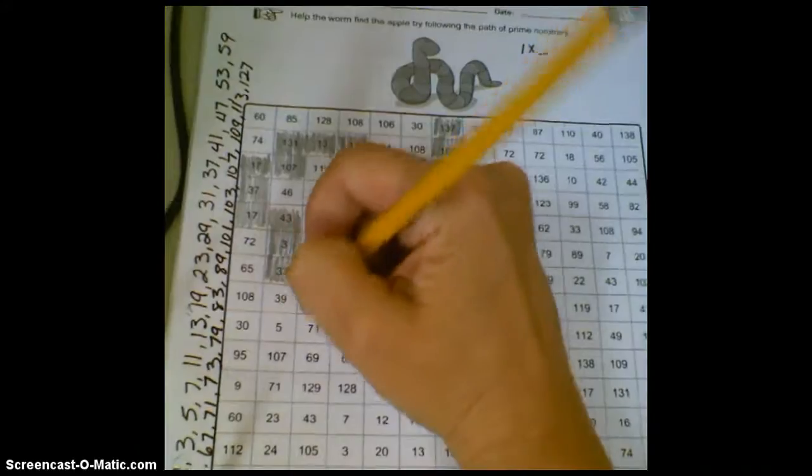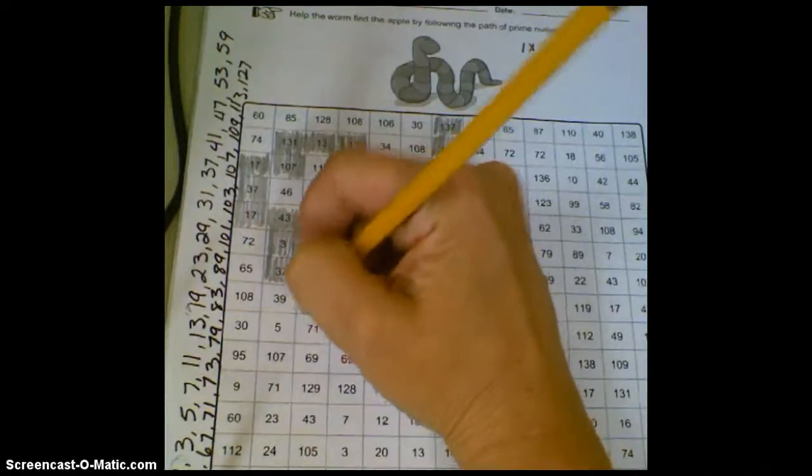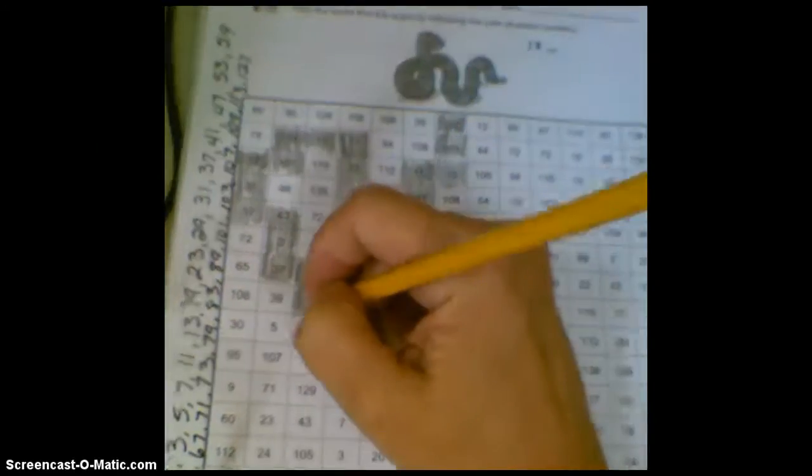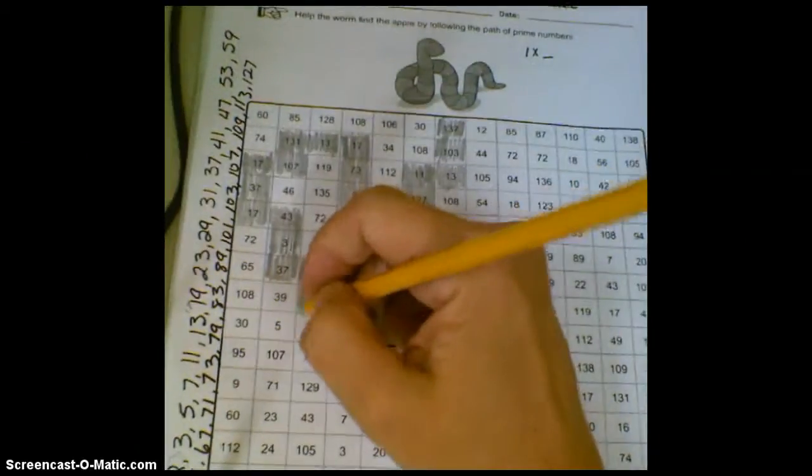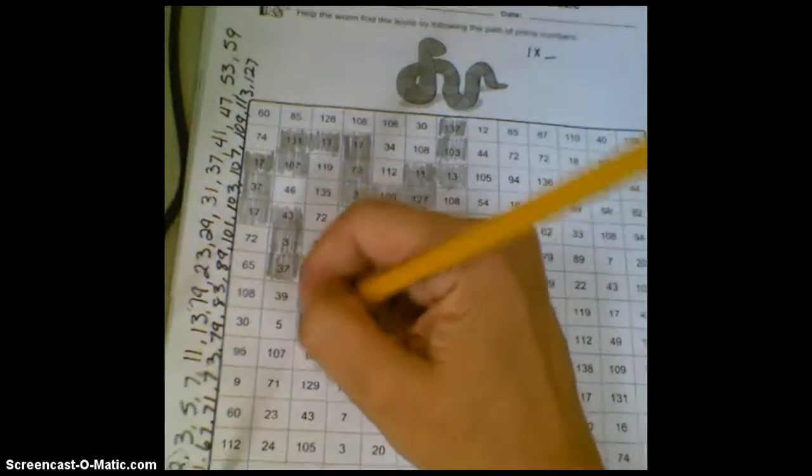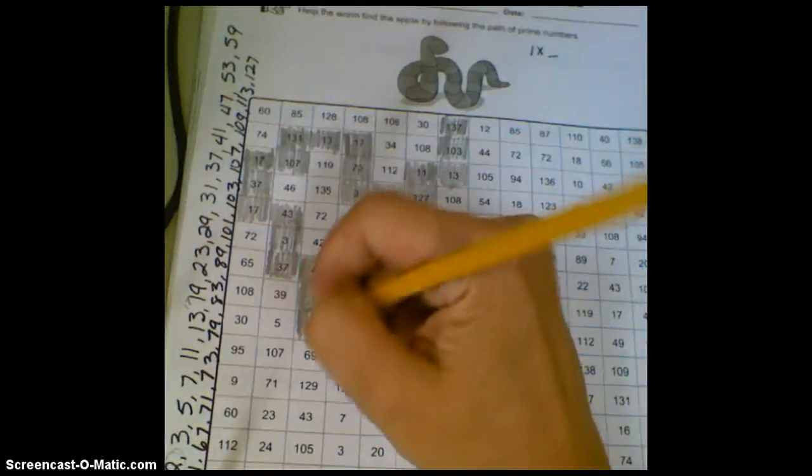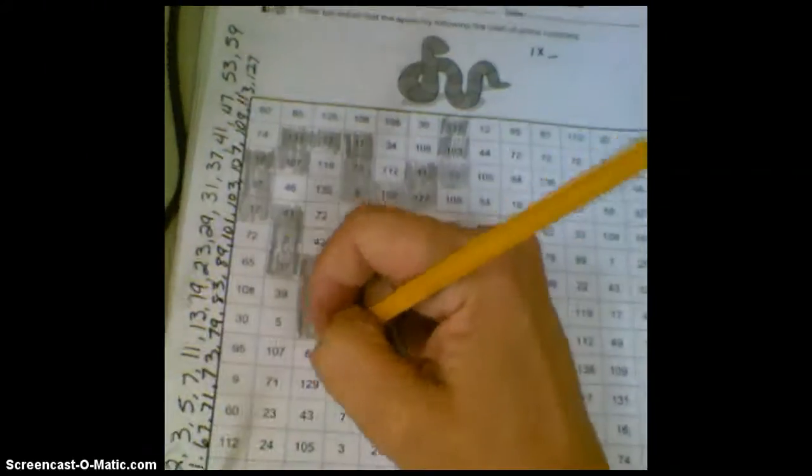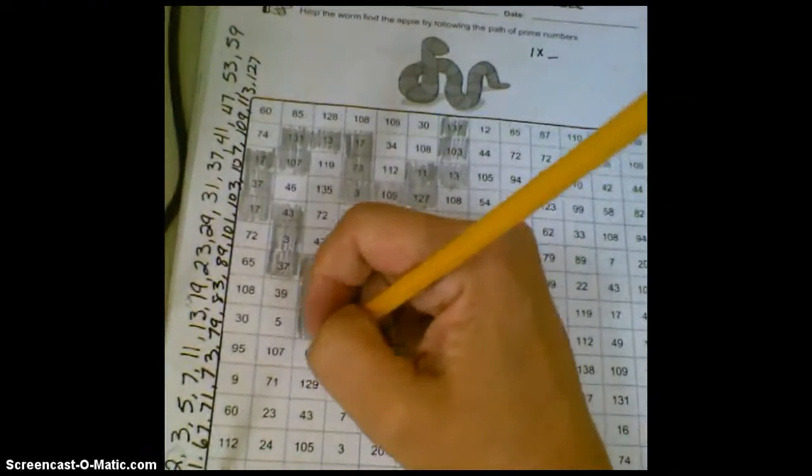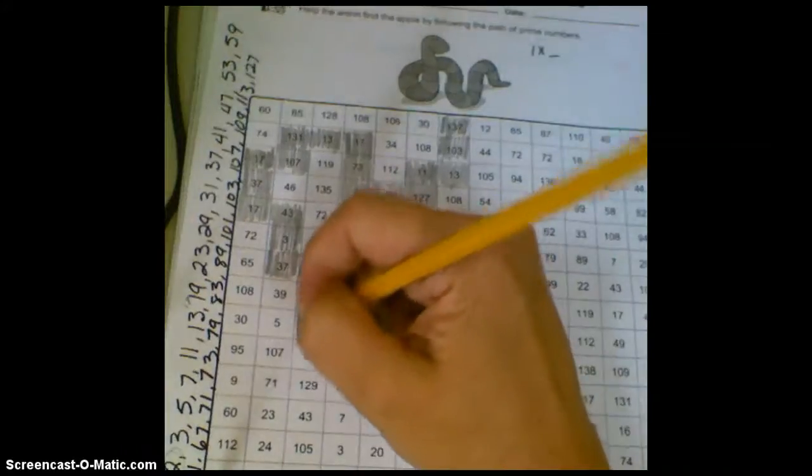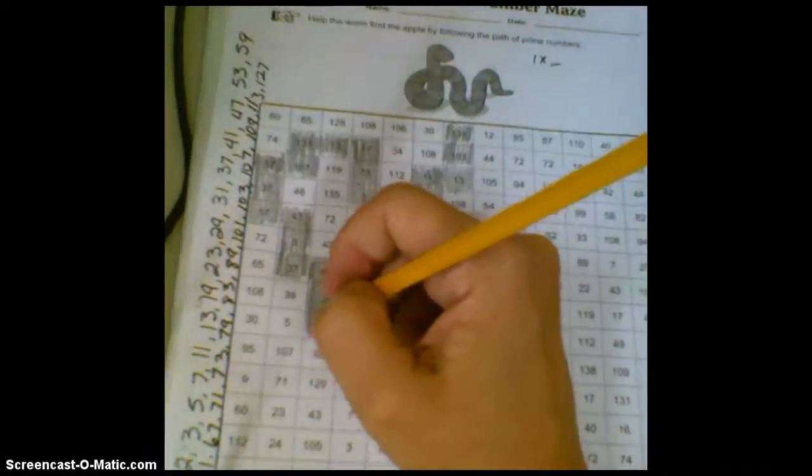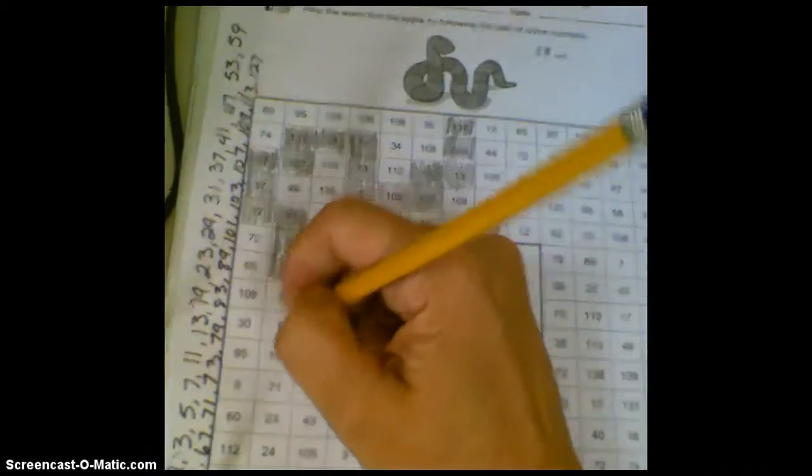Have we made it to our apple yet? Is 108 prime? Probably not. It is not, because it is even. 71, however, is prime. Slowly, but surely, we're getting there. Even, so it's not prime. 69. Again, if we add up the digits, 6 plus 9, it's going to be divisible by 3. 5, however, is prime, so we'll move this way.